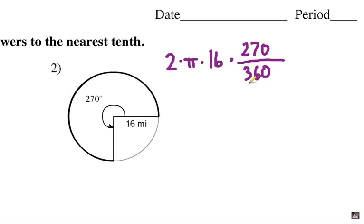Alright, let's simplify this. These degrees here can be factored out, we can take out a factor of 90, so that leaves a 3 on the top, a 4 on the bottom. And I know that the 4 and the 16 can be factored here, so that'll leave a 4 and a 1. Alright, what's left?